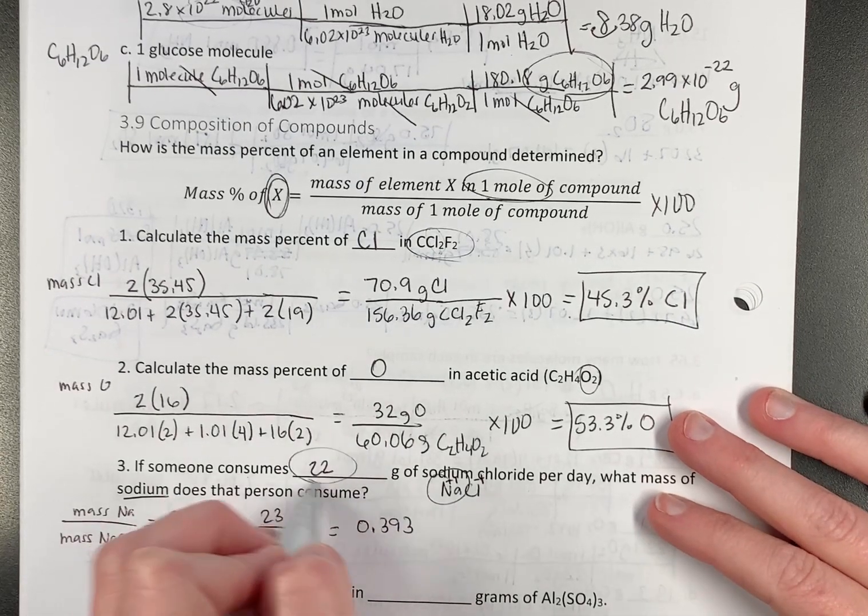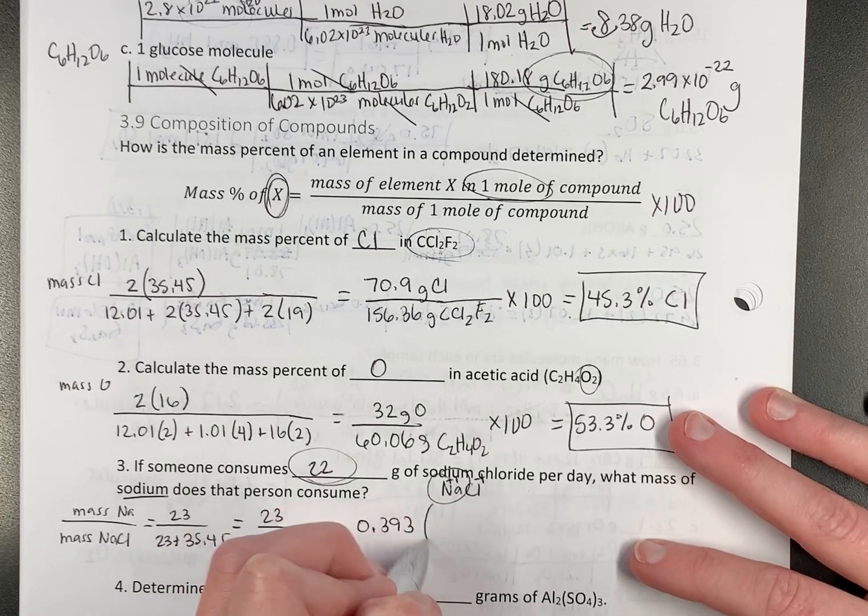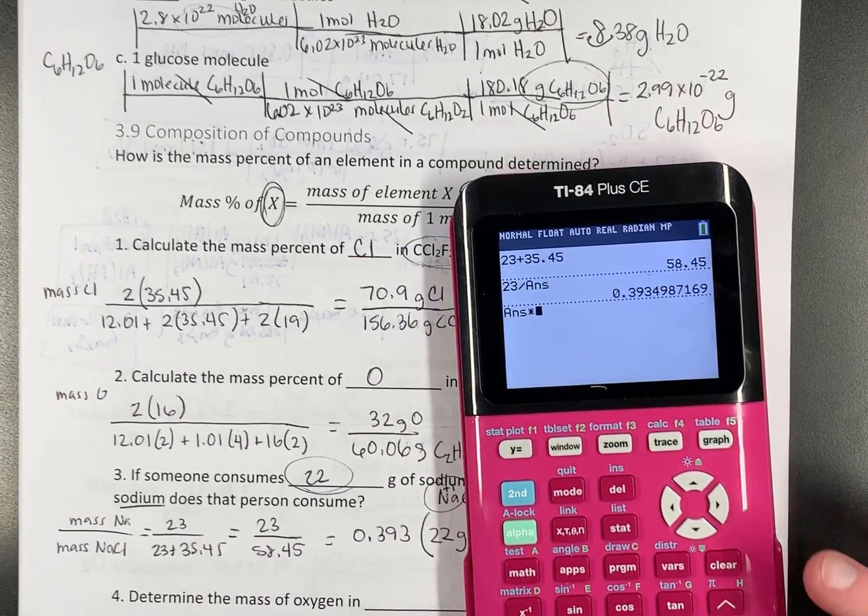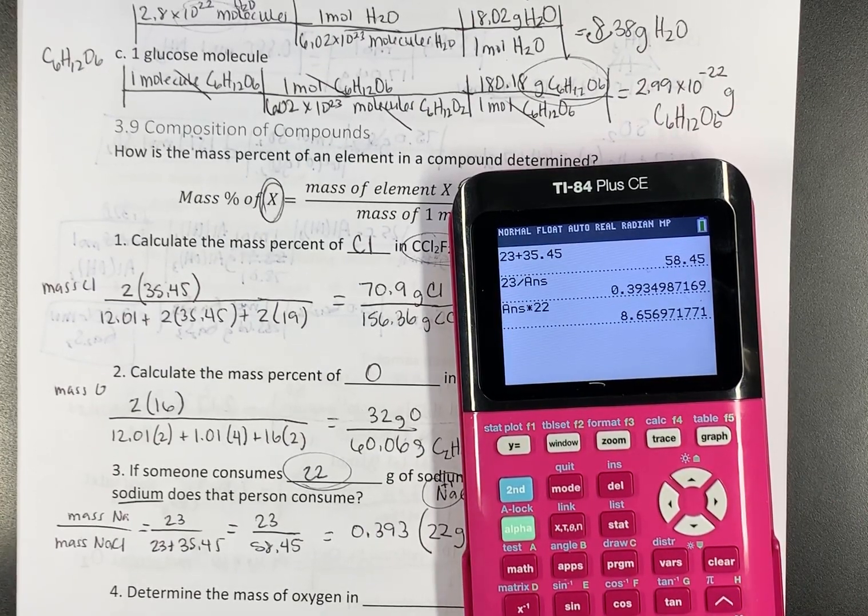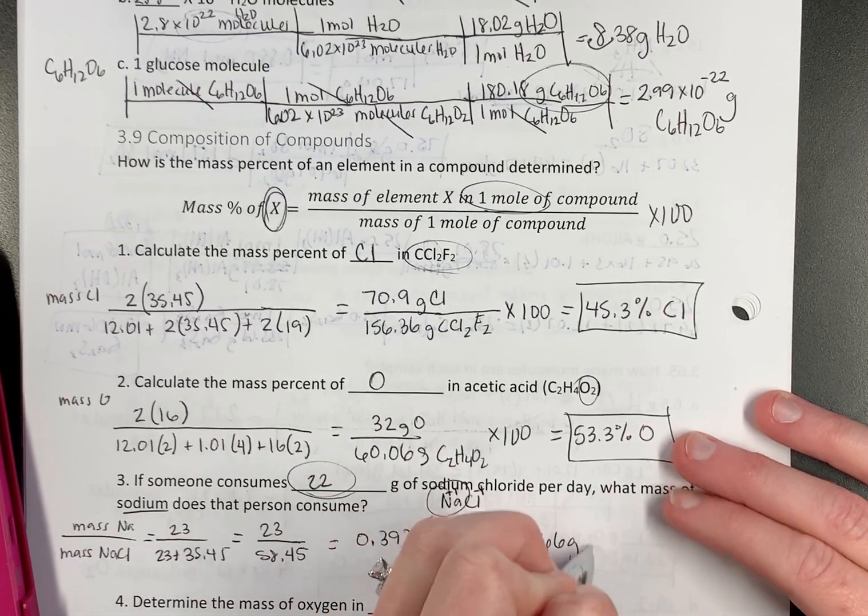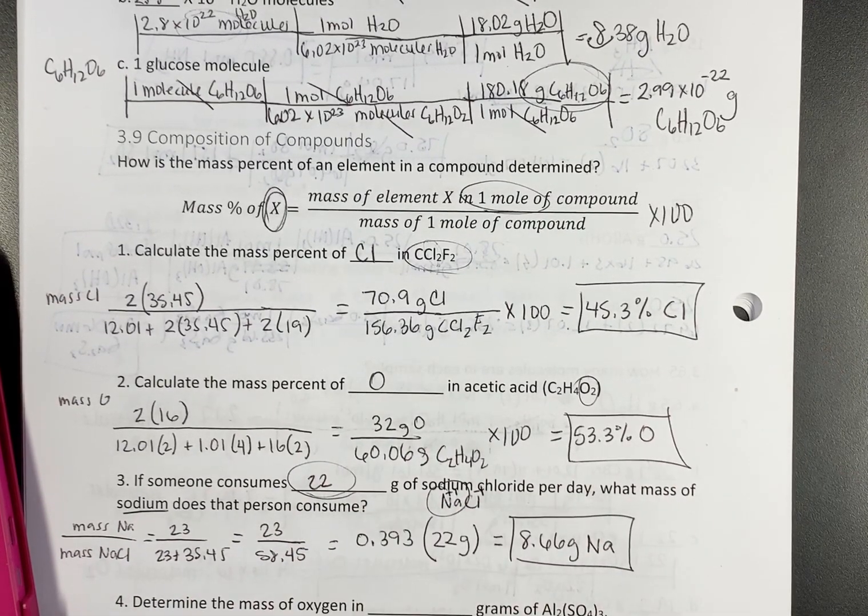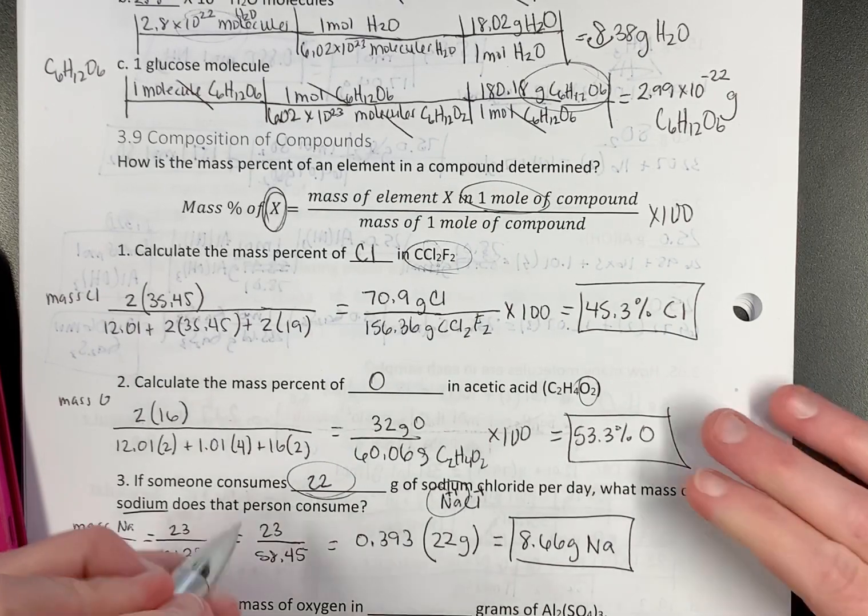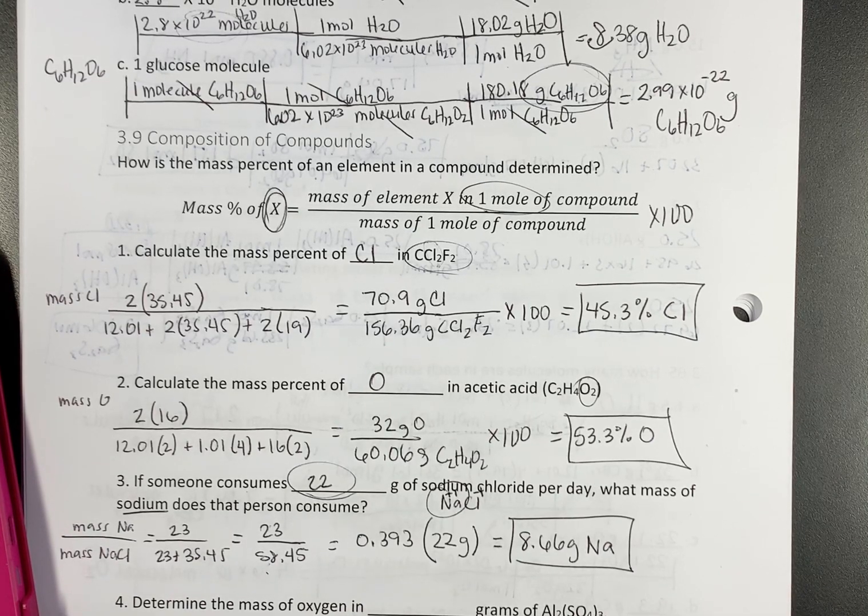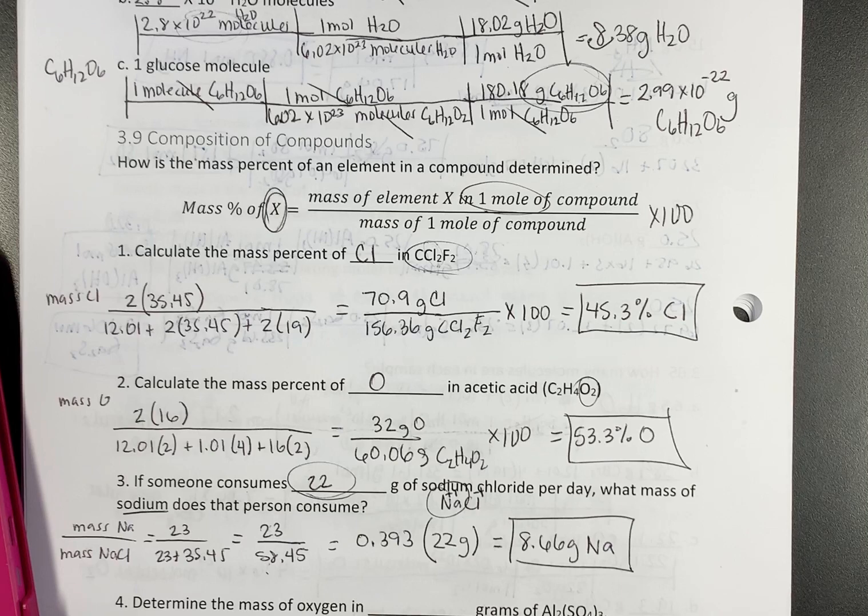So if a person ingests 22 grams of sodium chloride, you just multiply it out. And I'm not going to round off. So that person consumes 8.6-ish grams of just sodium. Does that make sense? That's just when you divide this out. Only instead of multiplying by 100, I just multiply by the mass that was given to me in the problem.